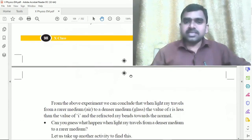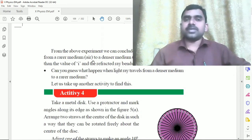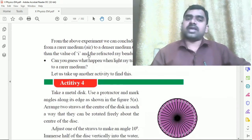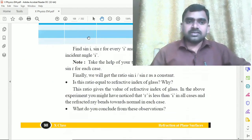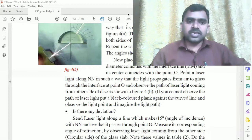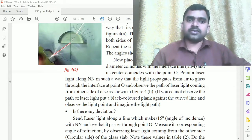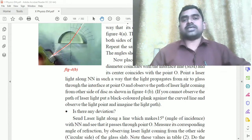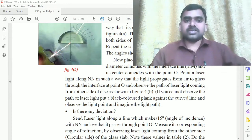What do you conclude from this observation? From the above experiment, we can conclude that when a light ray travels from a rarer medium to a denser medium, the value of angle of refraction r is less than the value of angle of incidence i, and the refracted ray bends towards the normal. That is the conclusion we give from this activity.